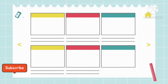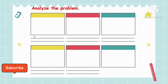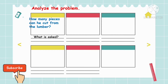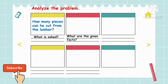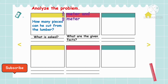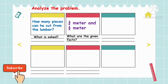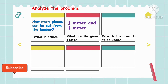We can analyze the problem by answering the following questions. So what is asked in the problem? How many pieces can he cut from the lumber? What are the given facts? The given facts are 3/4 meter and 1/2 meter.